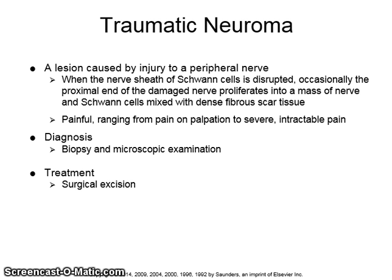A traumatic neuroma is a lesion caused by injury to a peripheral nerve. When the nerve sheath of Schwann cells is disrupted, occasionally the proximal end of the damaged nerve proliferates into a mass of nerve and Schwann cells mixed with dense fibrous scar tissue. It is painful, ranging from pain on palpation to severe intractable pain.